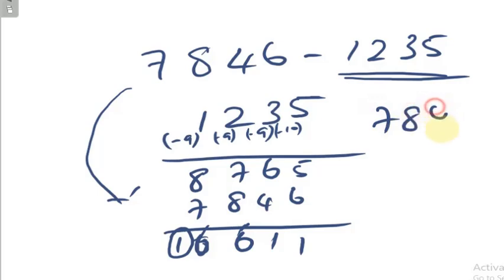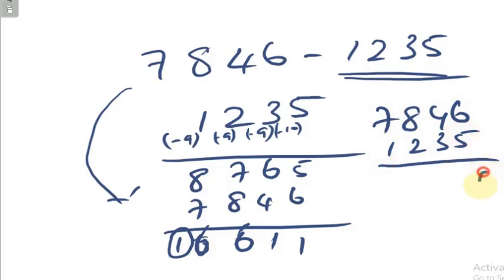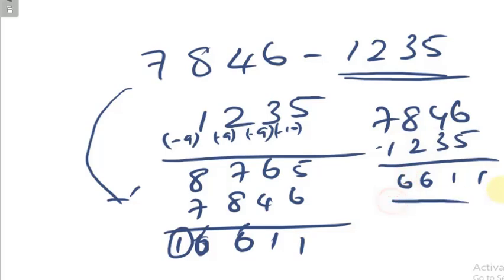You can check: 7846 minus 1235 directly. 6 minus 5 is 1, 4 minus 3 is 1, 8 minus 2 is 6, 7 minus 1 is 6. Answer: 6611. Same answer. We got it with this method too.